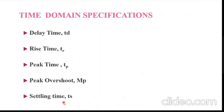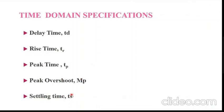The corresponding notations are: delay time is expressed as Td, rise time is expressed as Tr, peak time is expressed as Tp, peak overshoot is expressed as Mp, and settling time is expressed as Ts.